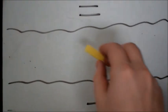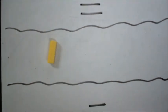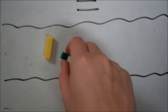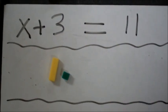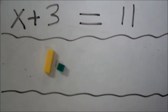So with the algebra blocks we're going to use yellow as our variable, and green as our unit. We're going to try to solve this problem. X plus 3 equals 11.